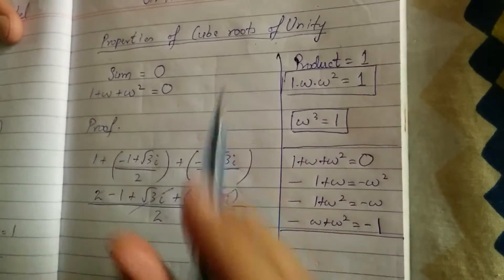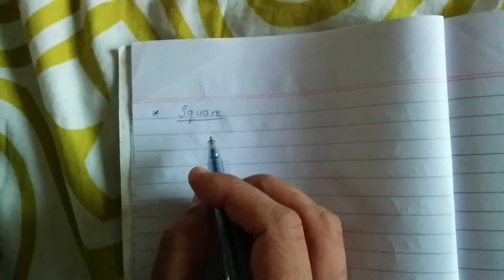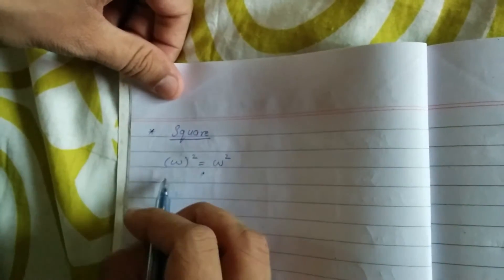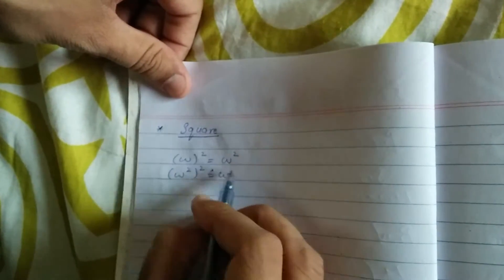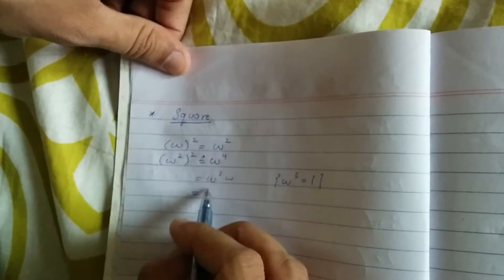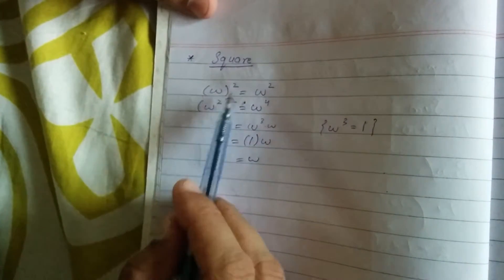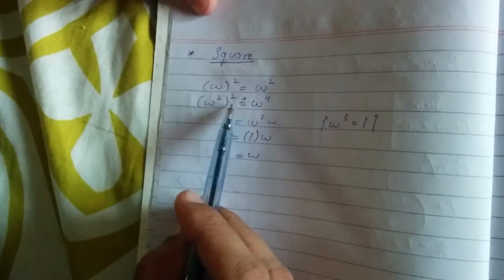We have discussed the properties of omega and omega square, that is the properties of cube roots of unity. Now we move forward to further properties — omega and omega square are squares of each other. If we square omega it becomes omega square. And if we square omega square, that becomes omega to the power 4. We break it as omega cube times omega. Since omega cube is 1, omega square squared becomes omega. So omega square is omega squared, and omega square whole squared equals omega.